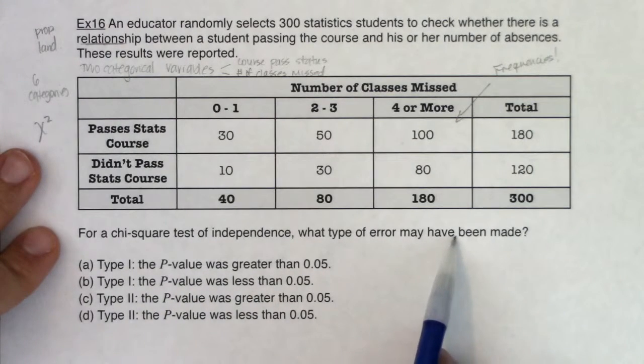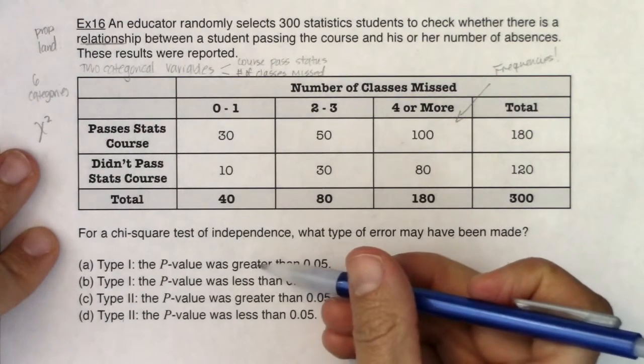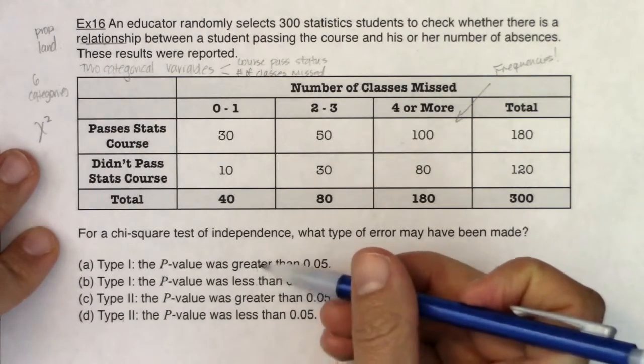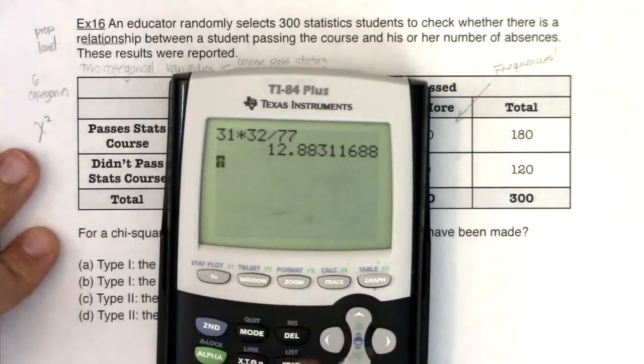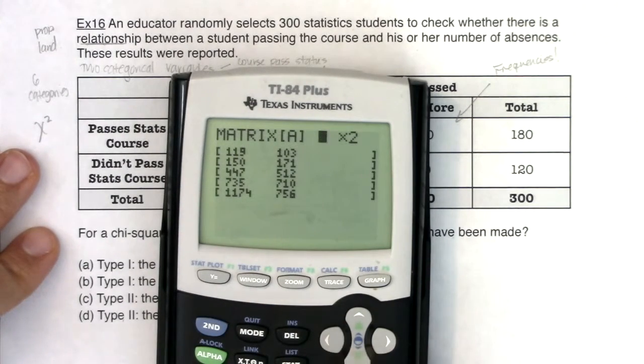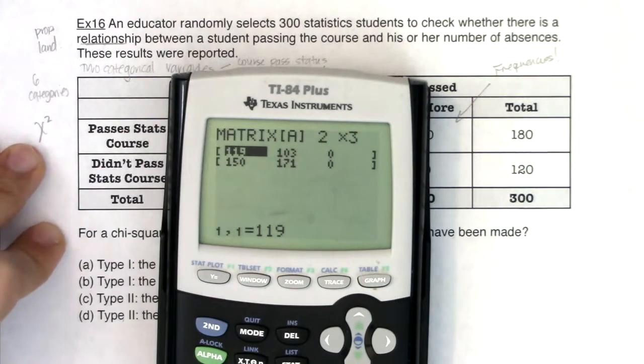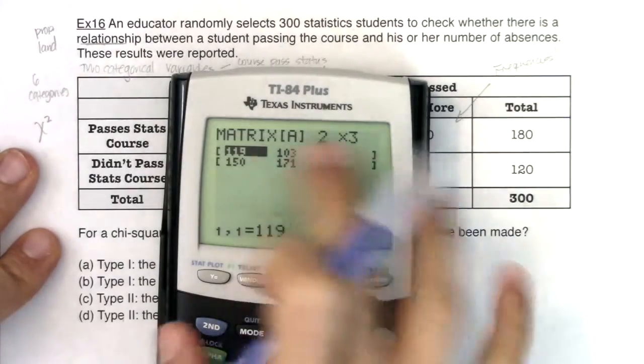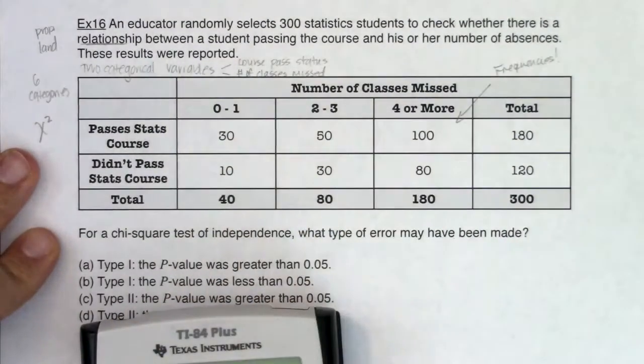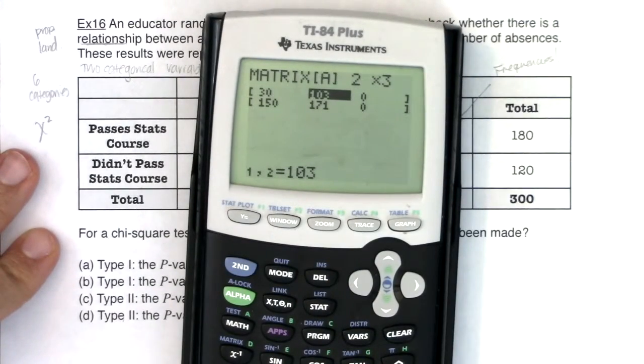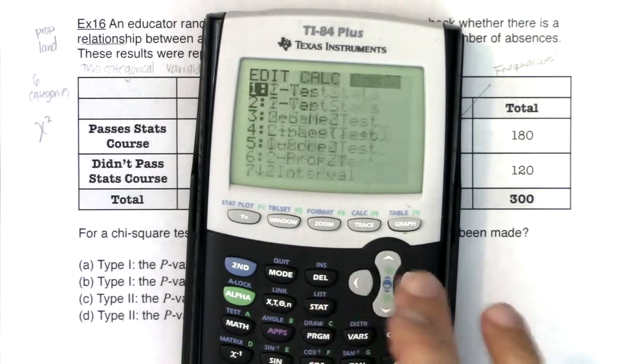So for the chi-squared test of independence, what type of error might have been made? Type one, type two, and then we have the p-value was greater than or less than 0.05. So it looks like the first thing I need to do is figure out what the p-value is. And just from that, I'll decide the p-value is either greater than or less than 0.05. That'll rule out two of the answers. So let's go into the matrix. I'm going to edit this out. So here, I need to make this match. I need a two by three. Now that looks like the table in front of me. So if I start pumping these in, we got 30, 50, 100, and then we have 10, 30 and 80. So I get my matrix, go in there and then let me go run my chi-squared test.